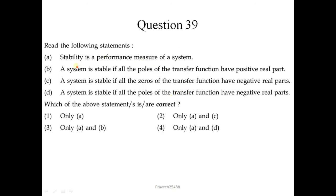Question number 39: stability is a performance measure of a system — this is correct. A system is stable if all the poles of the transfer function have positive real parts — this is not correct. A system is stable if zeros of the transfer function have negative real parts — this is also not correct. A system is stable if all the poles of the transfer function have negative real parts — this is correct, as poles should lie in the negative side of the S-plane. So A and D are correct; the fourth option is correct.